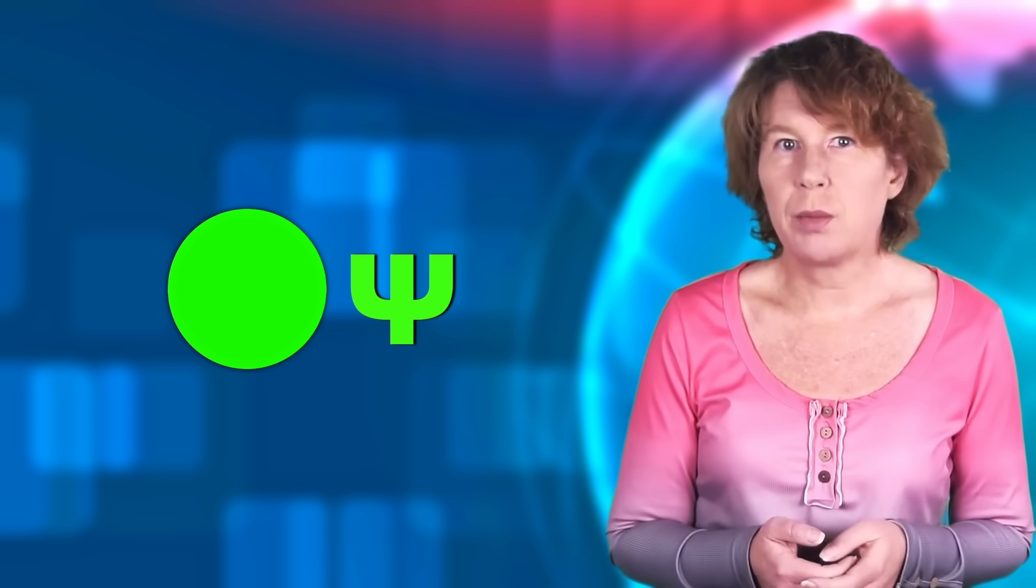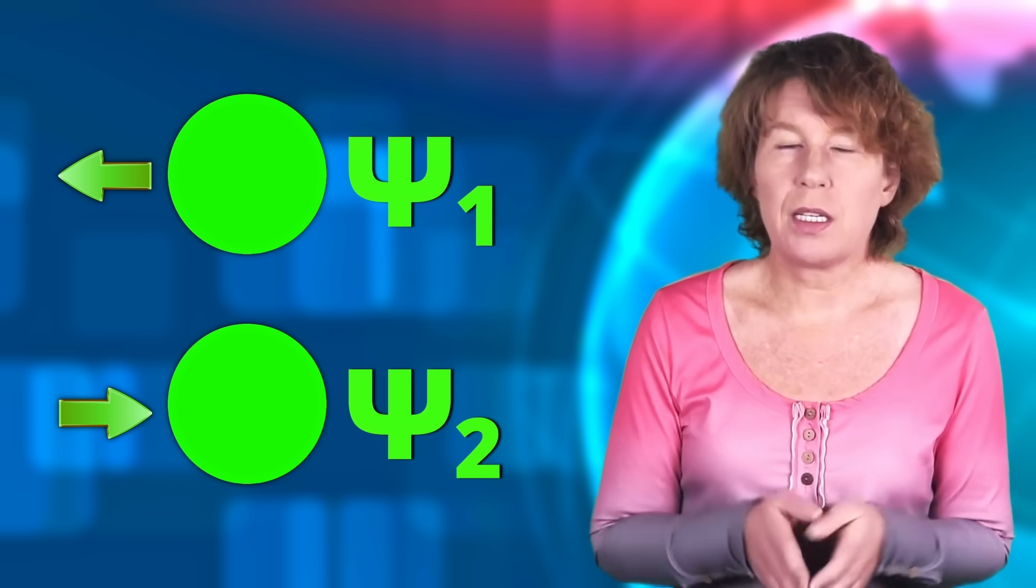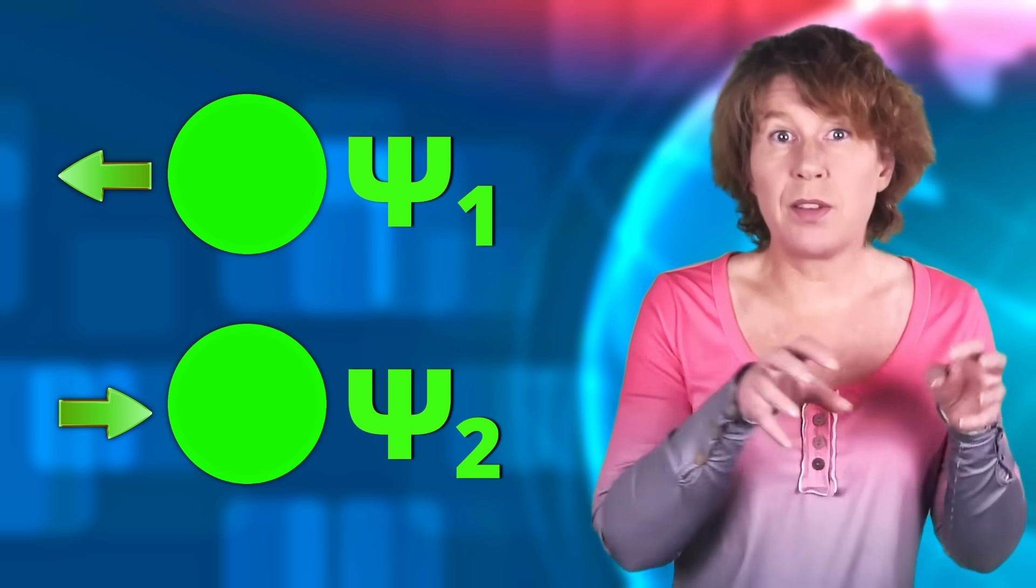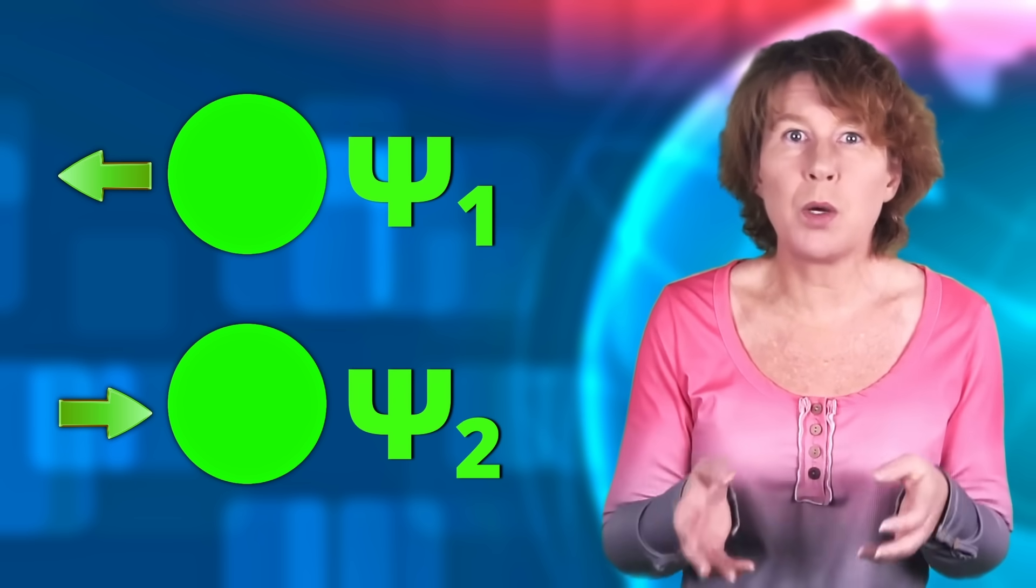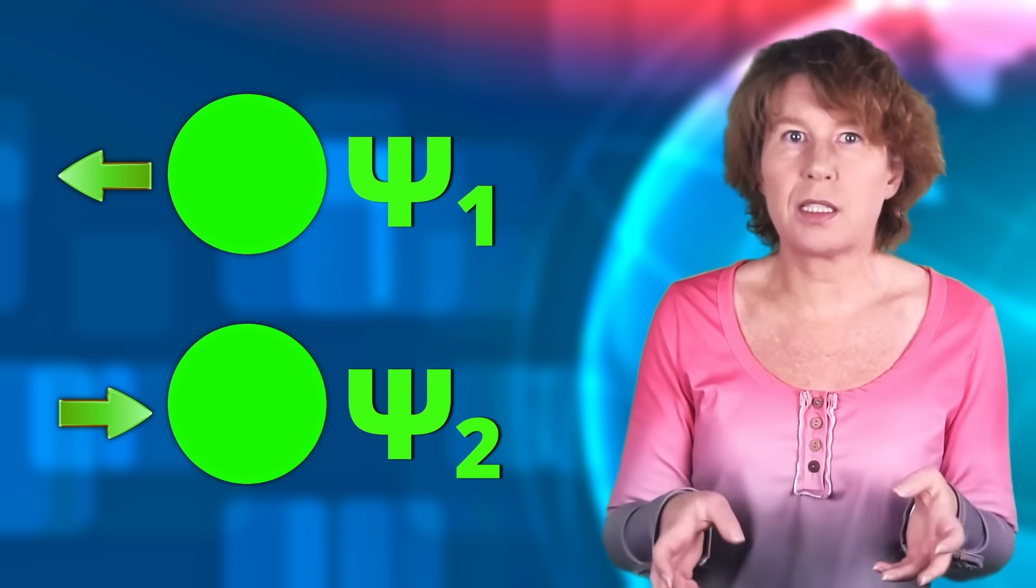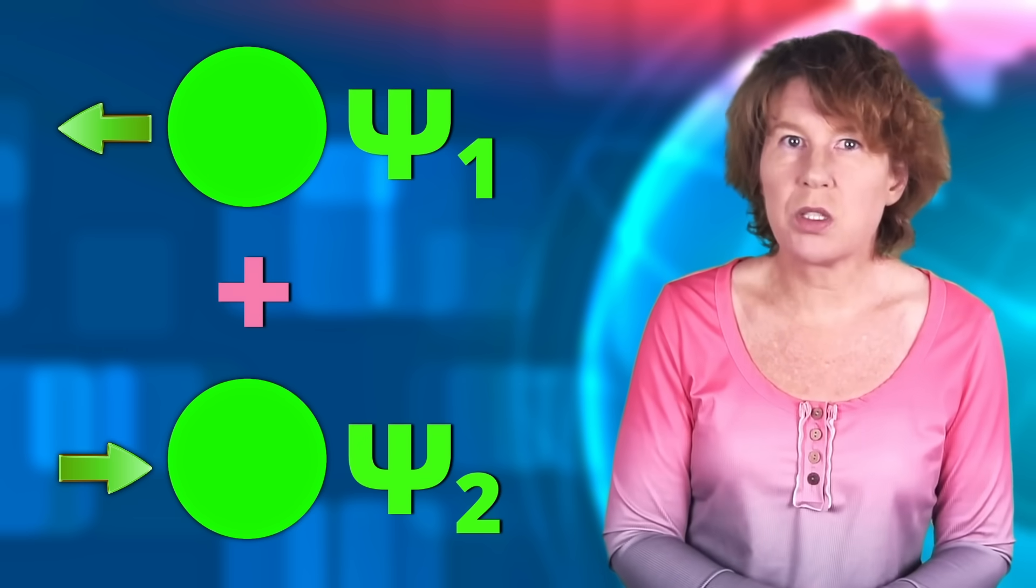We could have a wave function describing the particle going left and one describing it going right. The odd thing is now that in quantum mechanics, once you have that, the mathematics also allows for a particle that's the sum of going left and going right. This is called a superposition.